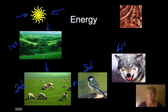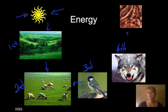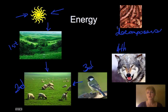Then we have the fourth level — these are the true carnivores, the big carnivores, the animals that are only eating other animals. We also have the decomposers. We don't actually put them on a level by themselves, but they are very important to the environment because they decompose pretty much all of the things that have died off.